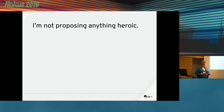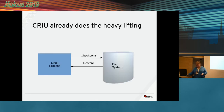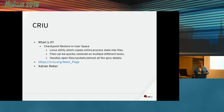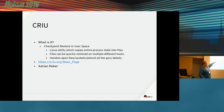Let me be absolutely clear here. Everybody has talked about all the hard work they've put into startups and other things. I'm not proposing anything heroic here. There's already a tool called CRIU — Checkpoint Restore in User Space — that does this for Linux processes. All I'm proposing is that we build on top of that. Adrian, he's my hero — he's now my best buddy. He did this as his PhD thesis and I've been working with him, talking to him and getting information, trying to figure out how to make this work for Java.